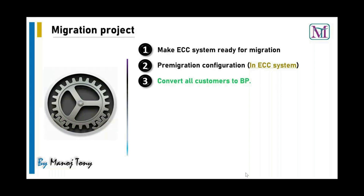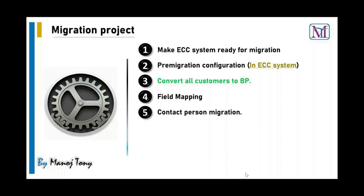The next step is to convert all customers to BP. The pre-conditions are: the system must be ready for migration, and pre-migration configuration must be completed. If there are contact persons, we need to do field mapping for contact persons and then migrate them. Our main role is to do the pre-migration configuration, convert all customers to business partners, perform field mapping, and then migrate the contact persons.